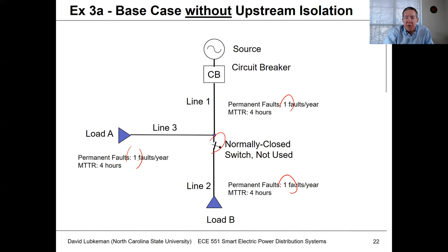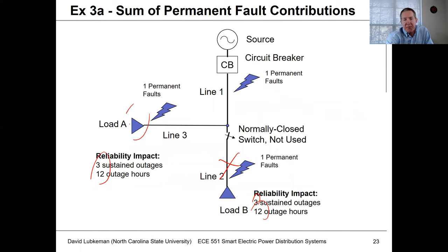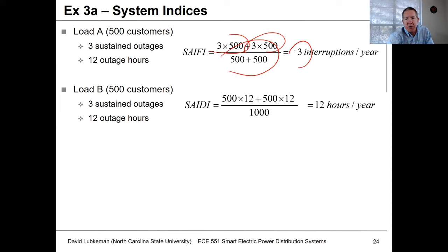Since the mean time to repair is four hours, there are four hours of outage associated with each of the three fault events. When we sum everything up, we get three outages and three times four gives us 12 outage hours for both customers. The fact that line section two has the fault means customers on line section three also suffer if we don't consider switching. Computing the indices: with the same number of customers at both load points, we get three interruptions per year for SAIFI and 12 hours per year for SAIDI — not a very good number.